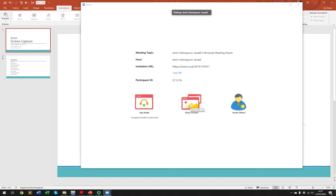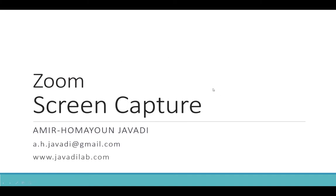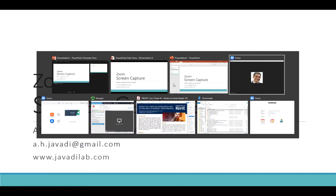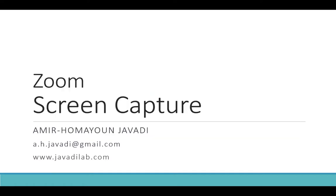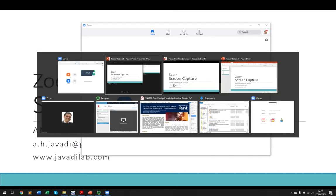Before beginning the screen share, I'm going to start the presentation in PowerPoint. I click on the slideshow option and it goes to full screen. Then I switch back to the Zoom screen — you can press Alt+Tab on Windows machines to bring up all open windows, or Command+Tab on Mac machines to bring up this list.